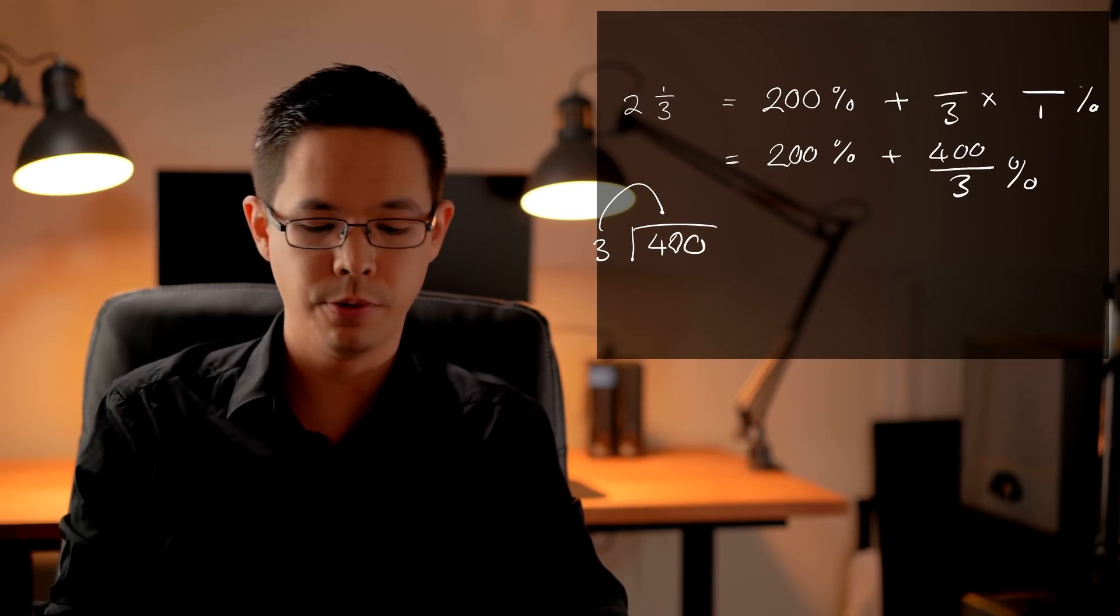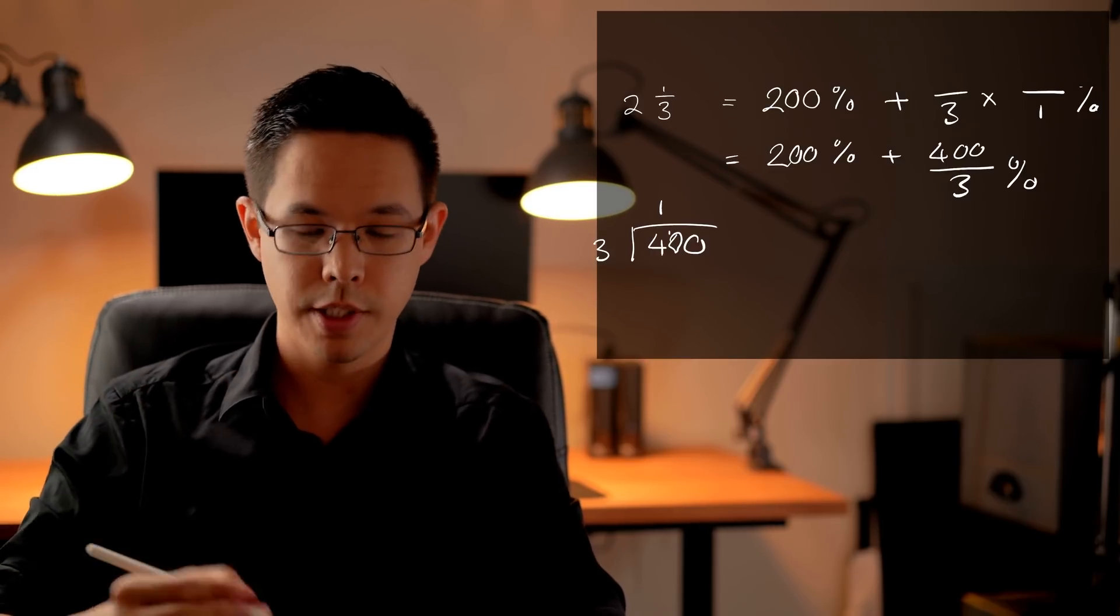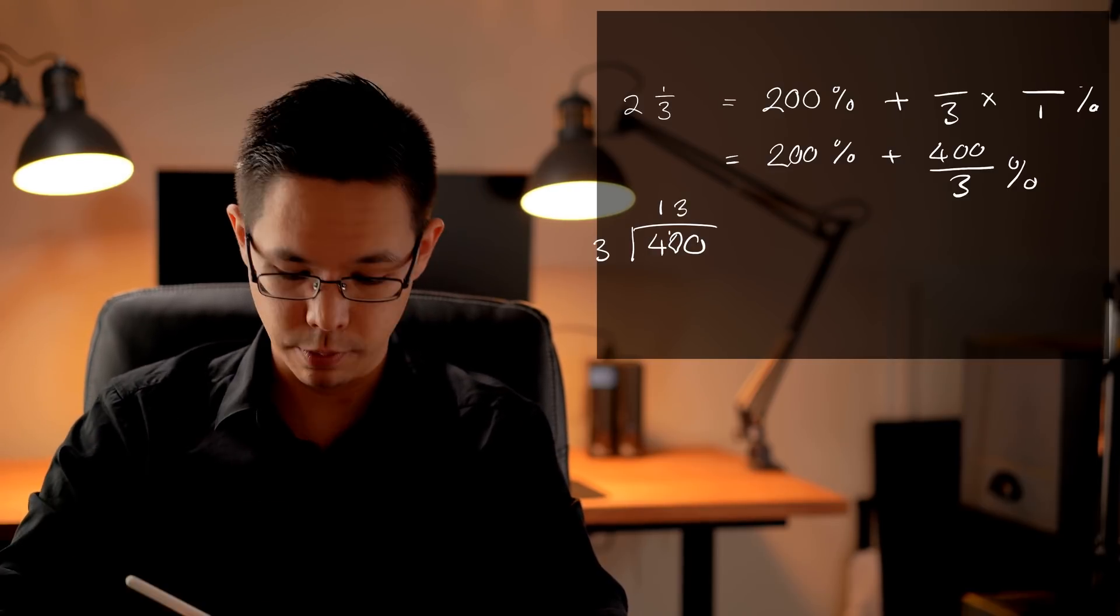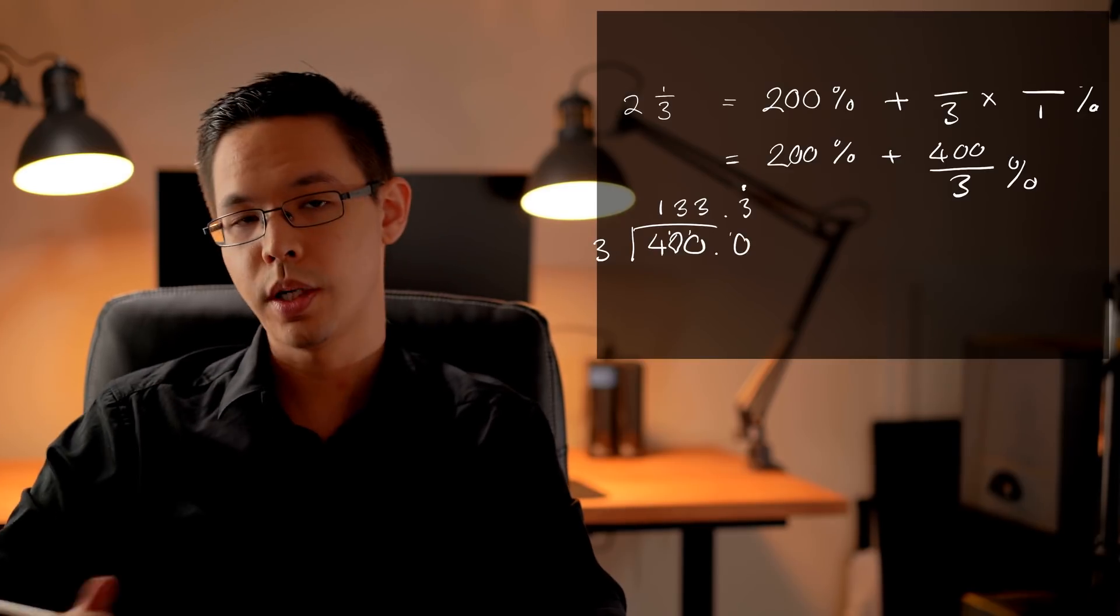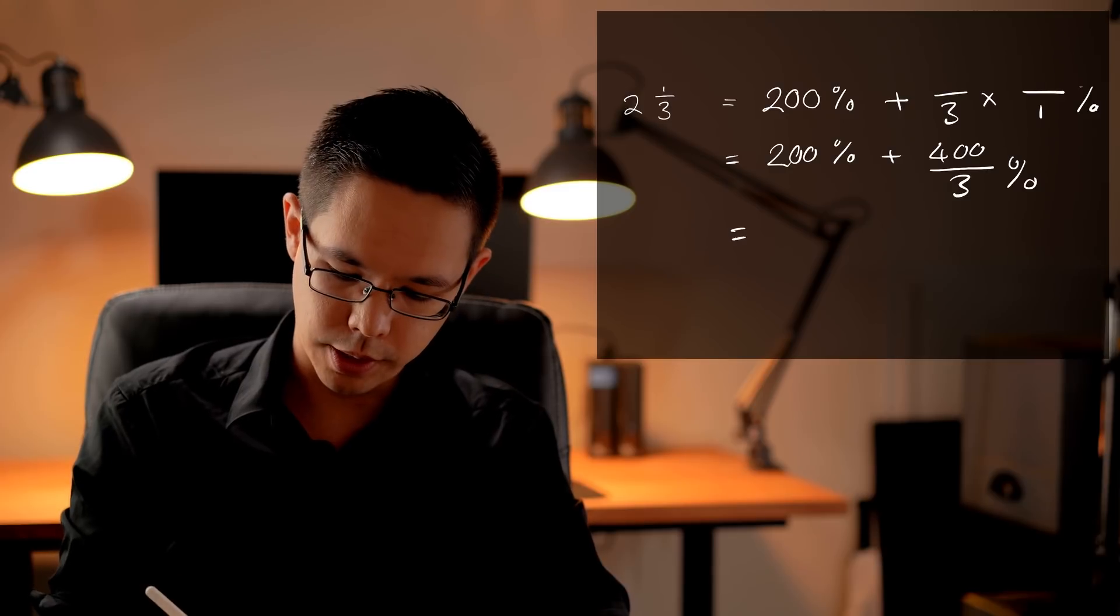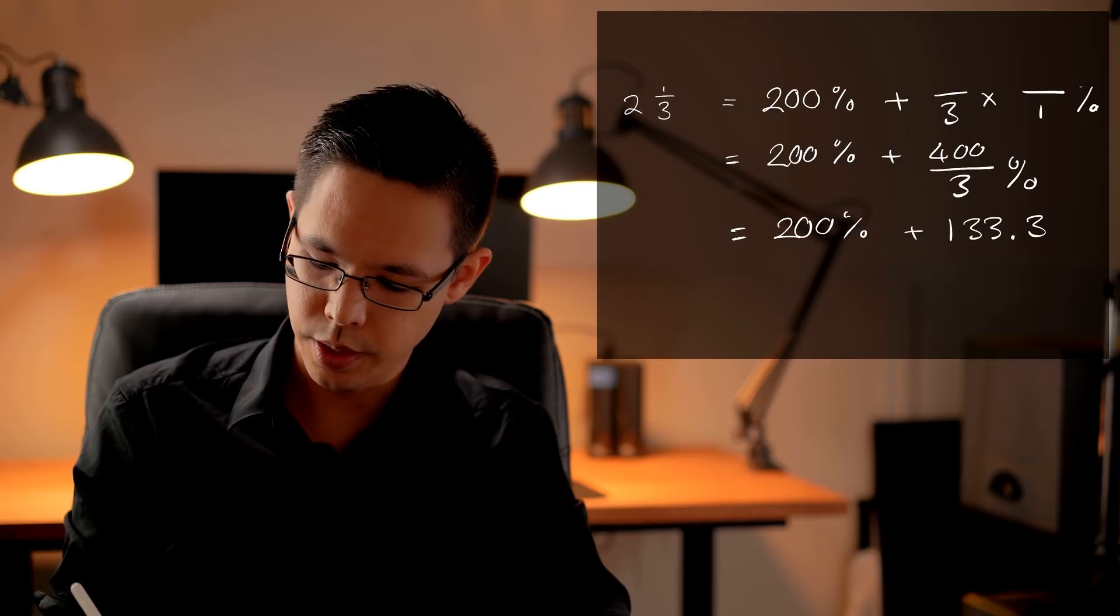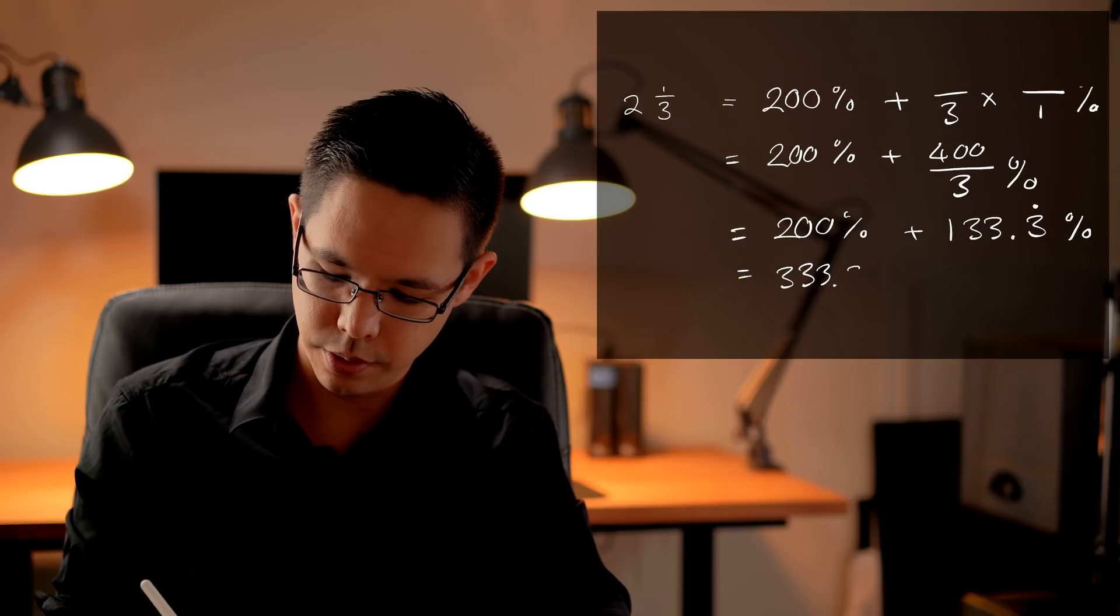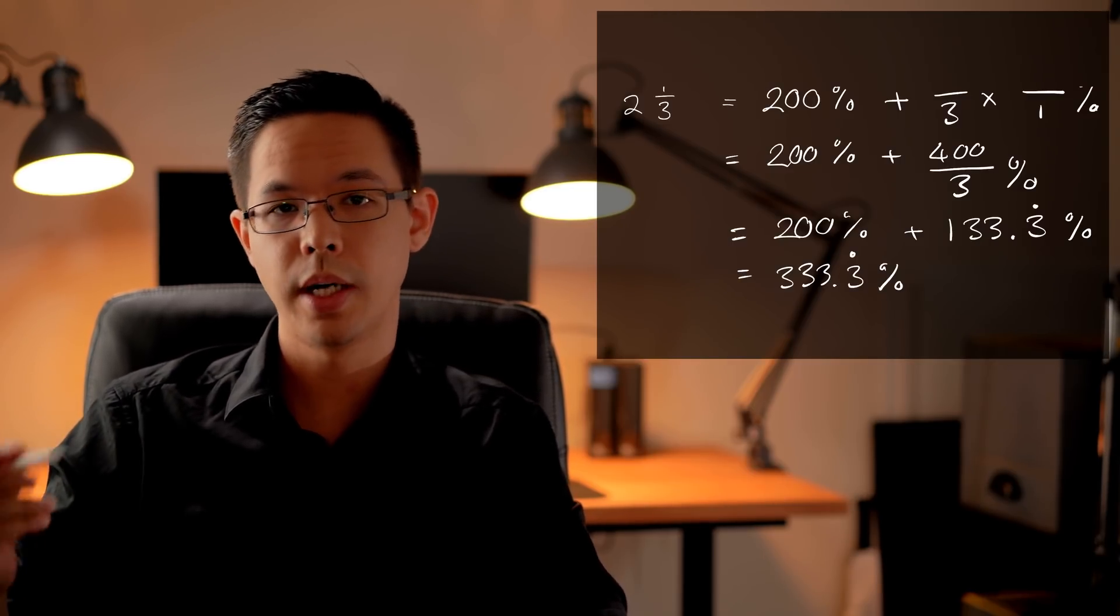So how many times does 3 fit into 400? So 3 fits into 4. It fits in there once with one remainder. So I now carry that across. So 3 fits into 10. 3 times 3 is 9. So it fits in there 3 times with again one remainder. So I'm starting to see the pattern once more. It appears that the answer is going to be 133.3 recurring percentage. My next row of working here is going to be 200% plus 133.3 recurring percent which gives a total of 333.3 recurring percent.